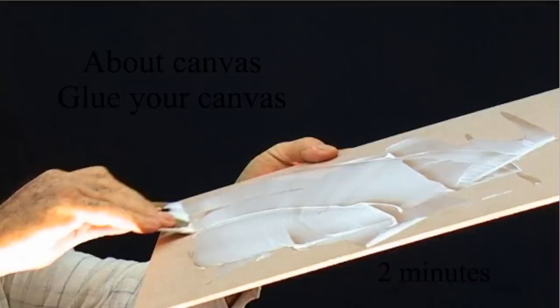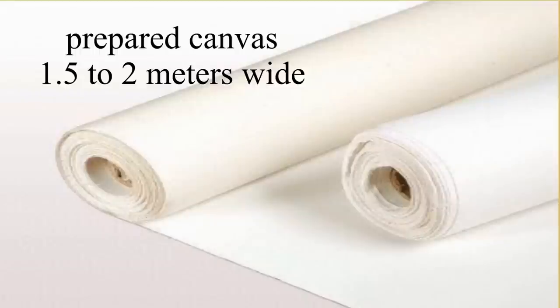We talk now about canvas and artboards and how to glue down your canvas. This is a typical piece of artist picture canvas. On one side it is prepared ready to accept the paint. The canvas usually comes in six meter rolls and it's usually about five to six foot wide.